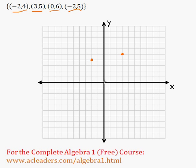Here, x is 0, y is 6. Let me see, did I count right? Yeah, I counted right. And negative 2, 5. Right there.